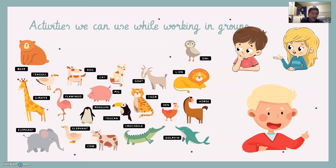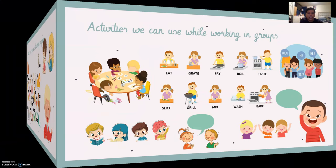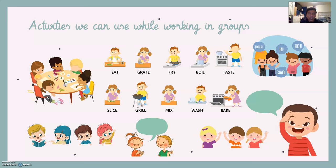You put each of those stronger students into each group so they can help the group, and you also want to have a kind of leader for each group. In this case they are going to discuss topics — for example, the names of animals, or describing activities like frying, etc., giving you the names of what the people in the pictures are doing.